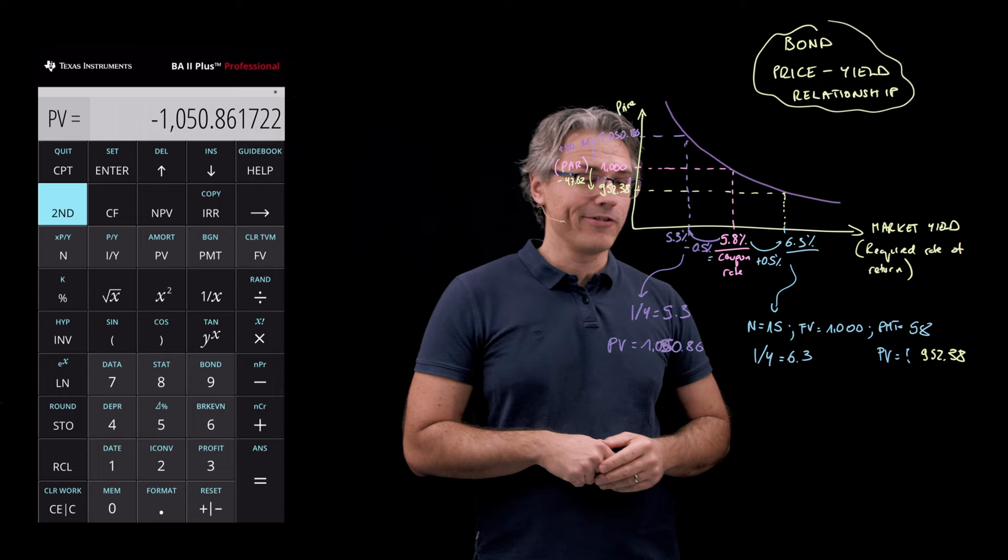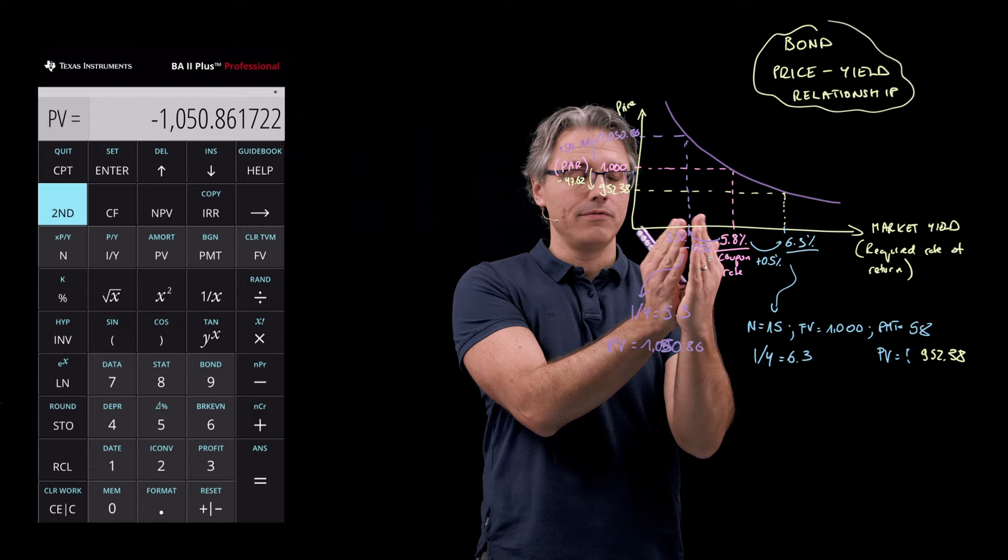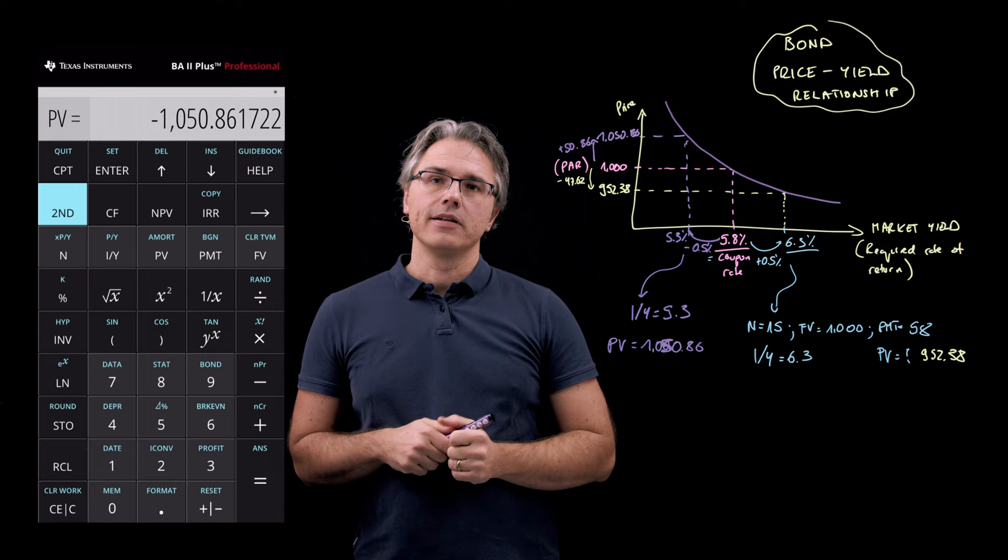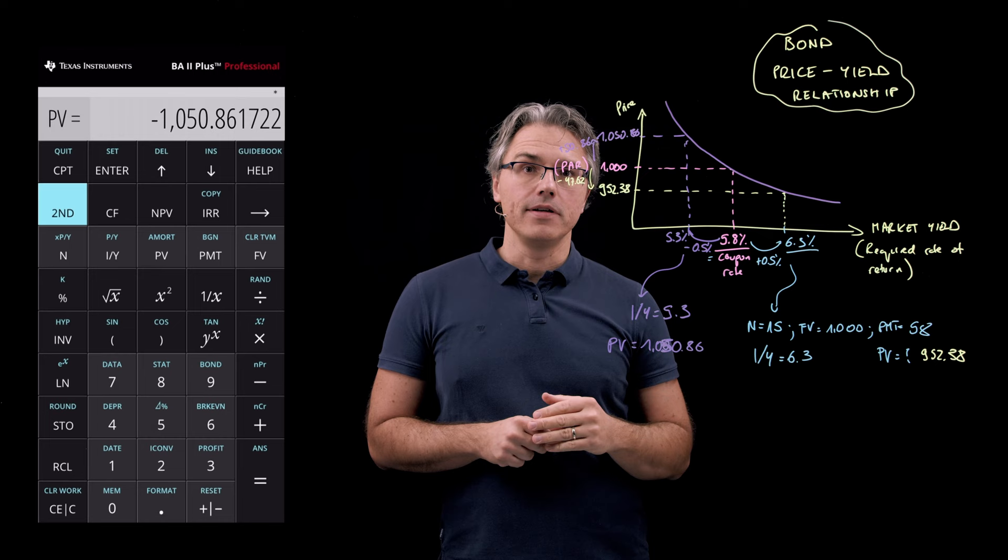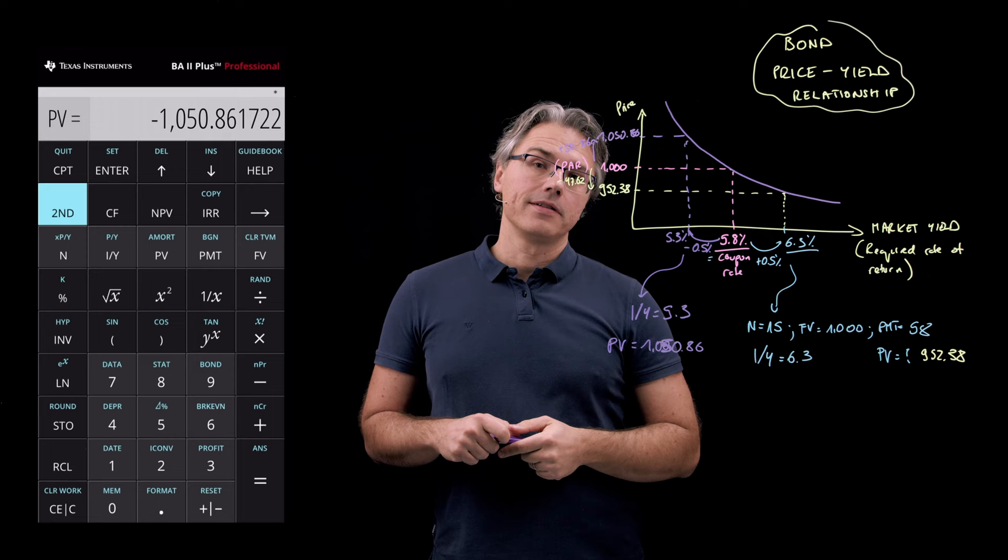So given a certain amount of change to market yields, they're not going to produce the same movement on the price axis. The price drop is going to be smaller for an interest rate increase or a market yield increase and bigger for an equivalent market yield decrease.